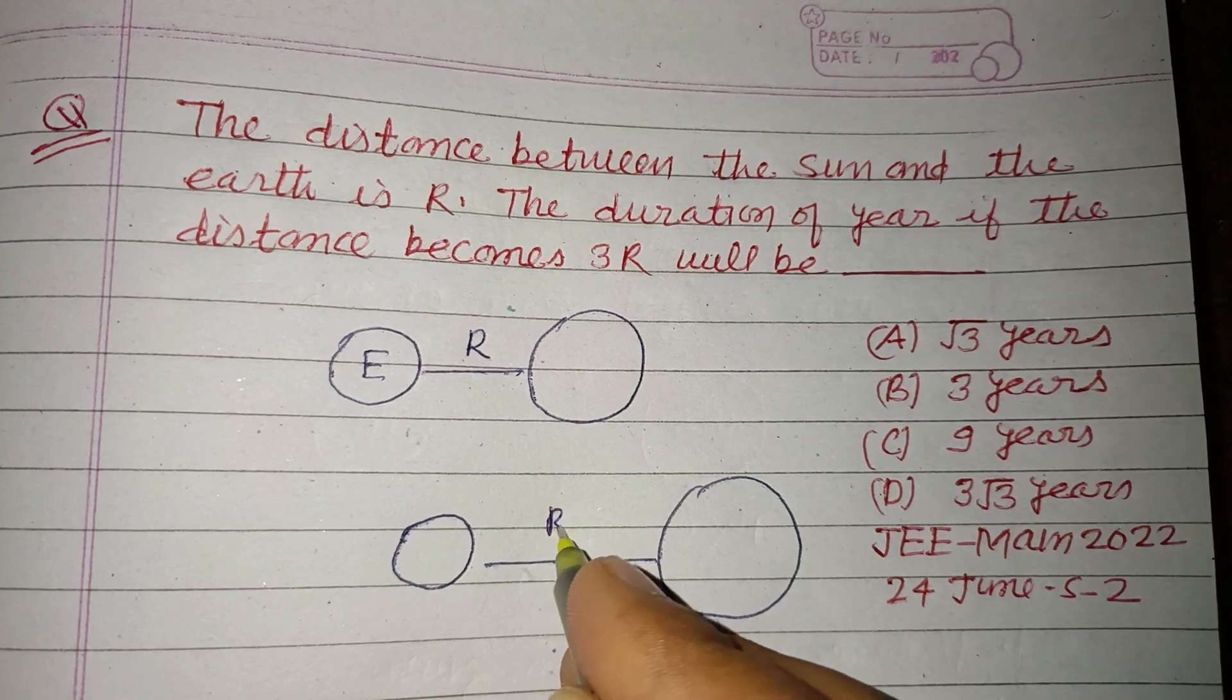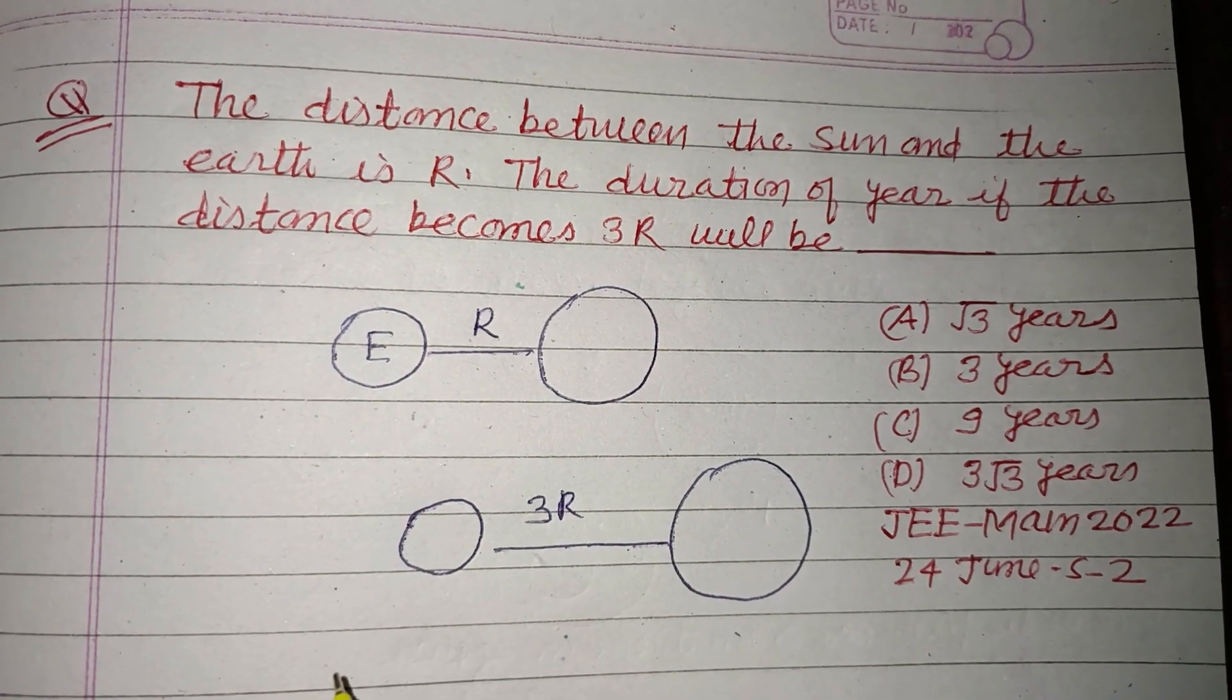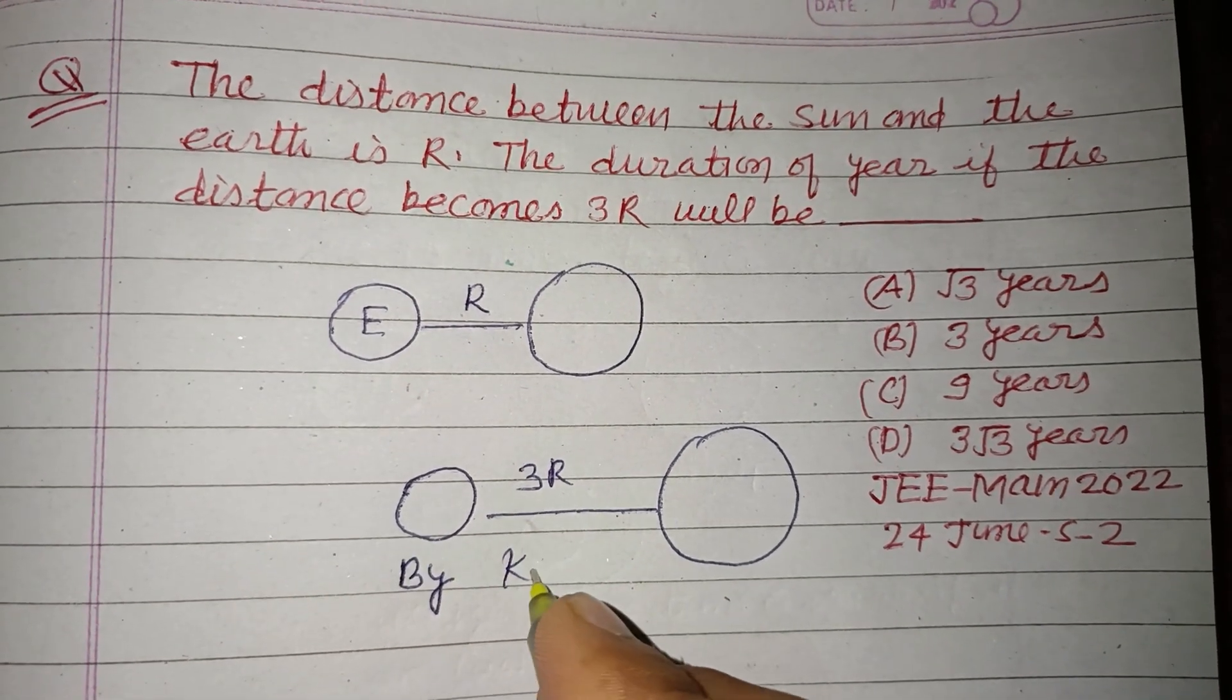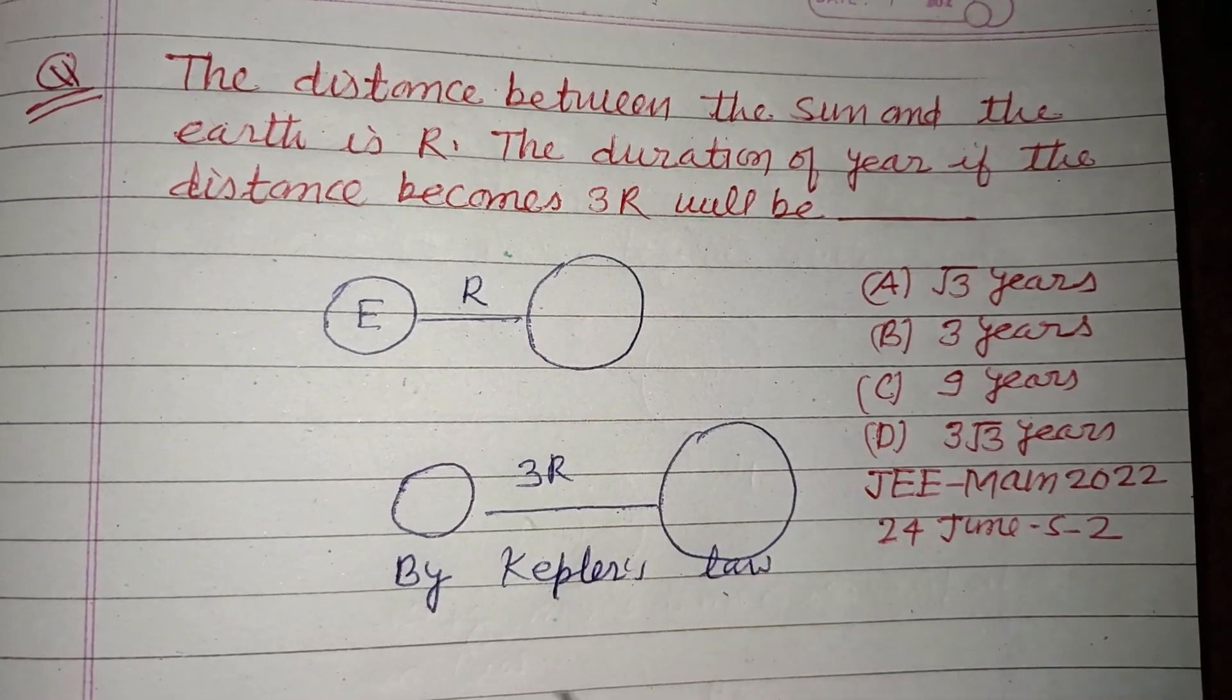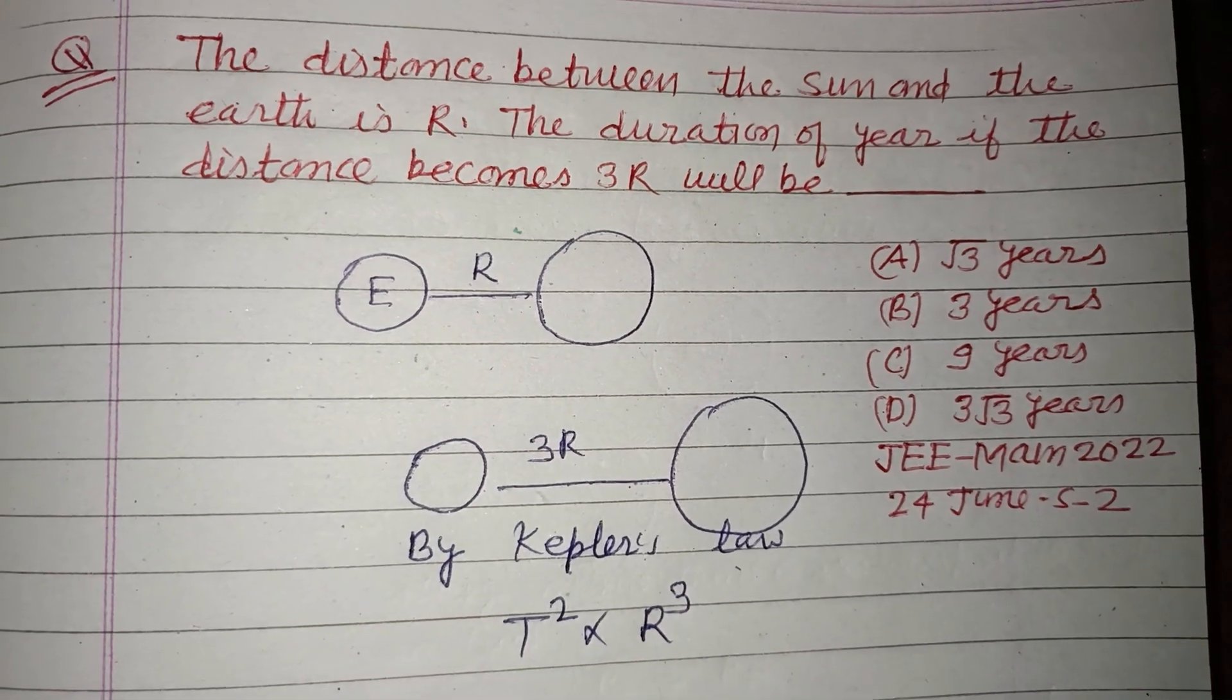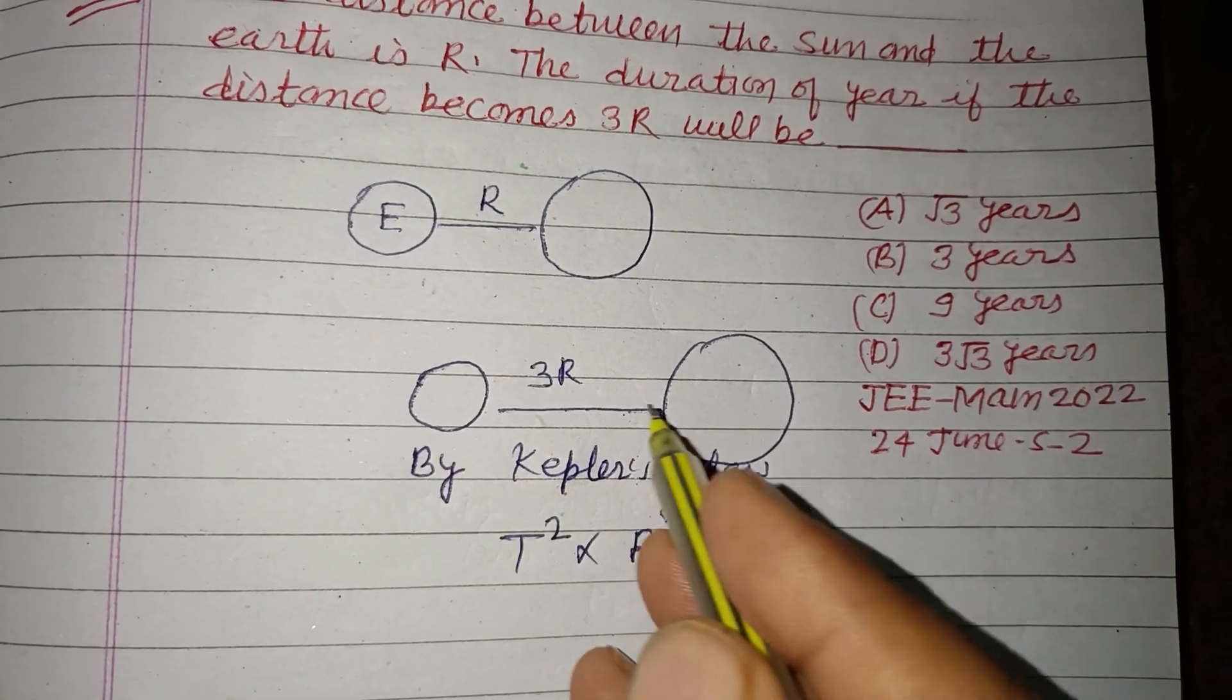Okay, so this becomes 3R, then duration is asked. So by Kepler's law, T squared is directly proportional to R cubed, or the distance between the Earth and the Sun.